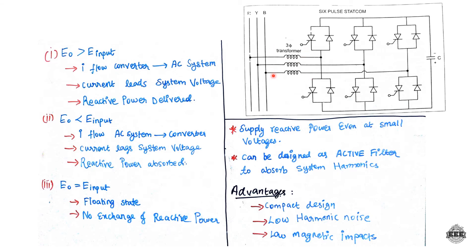Case 1: When E0 is greater than Einput, current flows from the converter to the AC system. The current leads the system voltage, which is capacitive in nature, so reactive power is delivered.